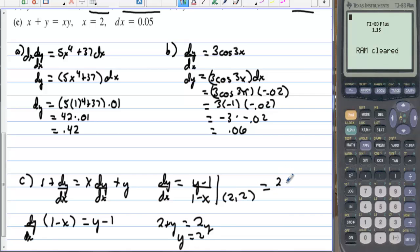That's equal to 2 minus 1 over 1 minus 2, which is 1 over negative 1. So the derivative is negative 1, but then we'd multiply all that by dx, so we're multiplying times 0.05, and that is equal to negative 0.05.